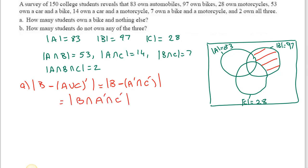Since |A∩B| = 53 and the triple intersection is 2, the region A∩B only = 51. Since |B∩C| = 7 and the triple intersection is 2, the region B∩C only = 5. Since |A∩C| = 14, the region A∩C only = 12. We can fill in the Venn diagram: B exclusively has 39 students. We can also find the other exclusive regions — 18 for A only and 9 for C only.